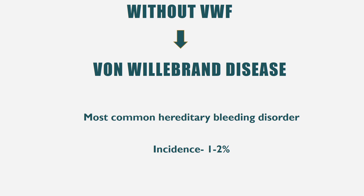Without von Willebrand factor, platelets are not targeted to areas of endothelial damage, leading to insufficient formation of platelet plug and fibrin clot. There will also be secondary deficiency of factor VIII due to accelerated clearance, as its half-life is reduced from 12–24 hours to only 2–4 hours. This results in von Willebrand disease, the most common hereditary bleeding disorder, with an incidence of 1–2% in the whole population, caused by a qualitative or quantitative defect in von Willebrand factor.